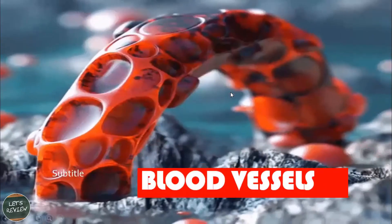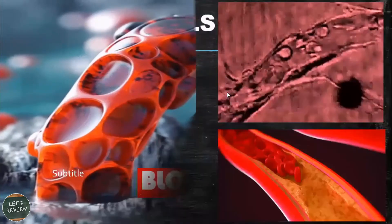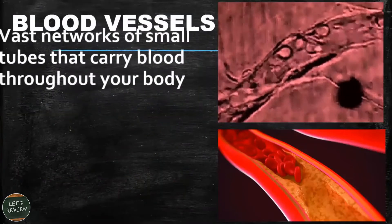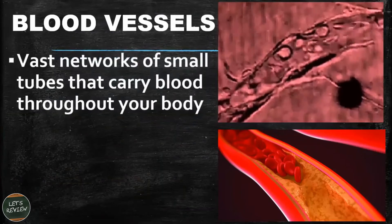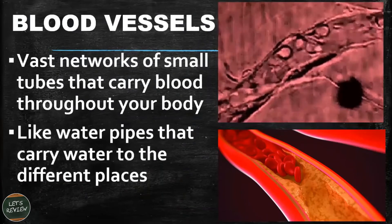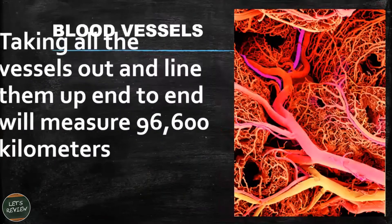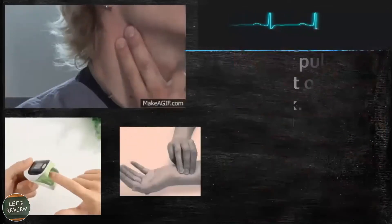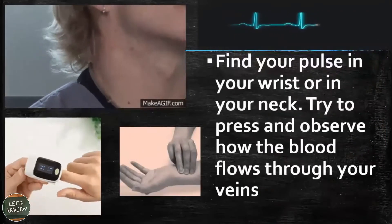Let's talk about blood vessels. Blood vessels are vast networks of small tubes that carry blood throughout your body, similar to water pipes that carry water to different places. Taking all the blood vessels out and lining them end-to-end would measure about 96,600 kilometers estimated.